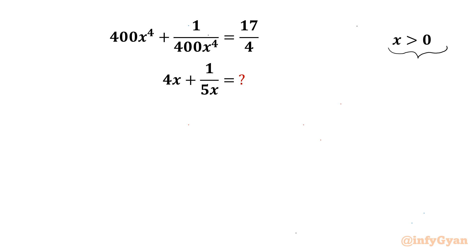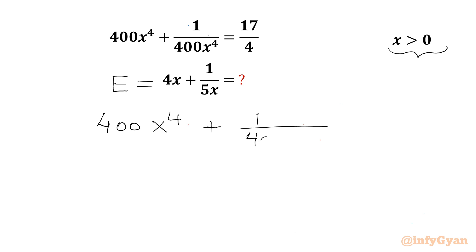Let's get started by considering the expression equal to E. Now I will write our equation: 400x⁴ plus 1 over 400x⁴ equals 17 over 4.